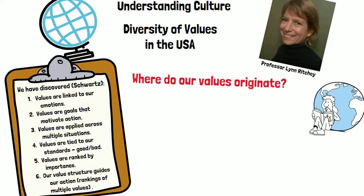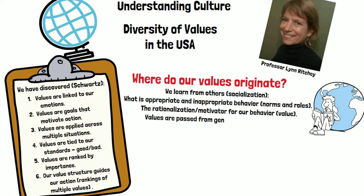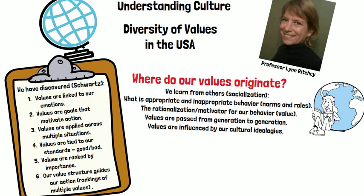Many people wonder where our values originate. We learn from others during our socialization what is appropriate and inappropriate behavior — our norms and rules. We also learn the rationalization for our behavior, our values, and our values are passed from generation to generation and they are influenced by our cultural ideologies. In the United States we had multiple ethnic groups or immigrant groups who settled in particular areas. To understand the diversity of values in the United States we need to take a look at the value structures of these immigrant groups and how that guided their actions and how it continues to guide our actions today.